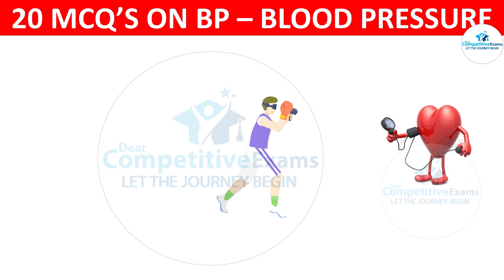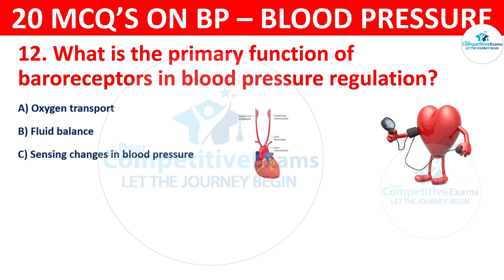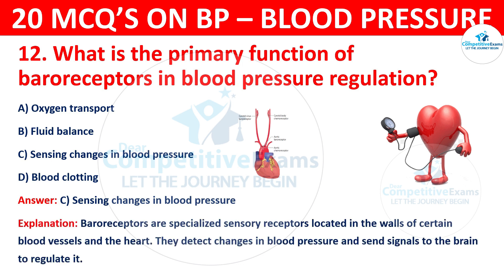Question 12. What is the primary function of baroreceptors in blood pressure regulation? The options are: Oxygen transport, Fluid balance, Sensing changes in blood pressure, or Blood clotting? The correct answer is C, Sensing changes in blood pressure. Baroreceptors are specialized sensory receptors located in the walls of certain blood vessels and the heart. They detect changes in blood pressure and send signals to the brain to regulate it.